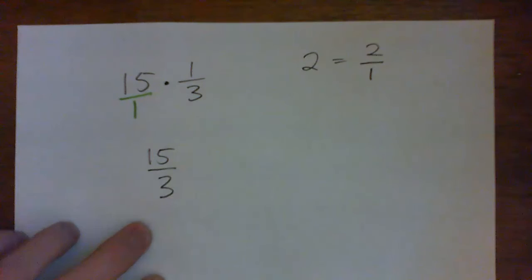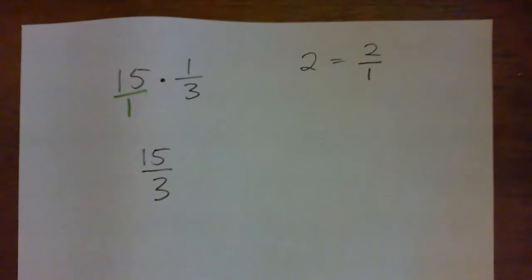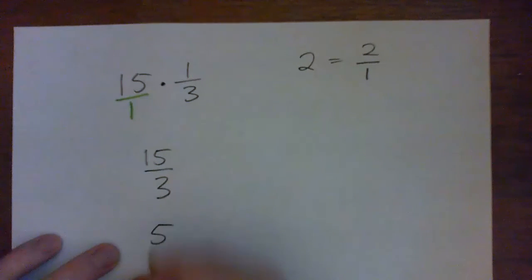And now what's 15 divided by 3? 15 divided by 3 is 5, and that's all we need to know for that.